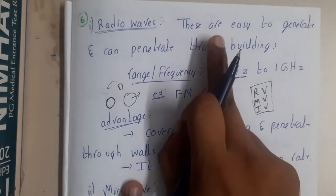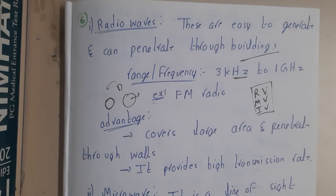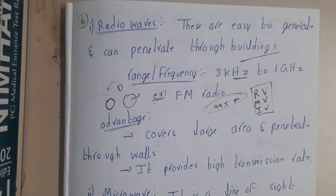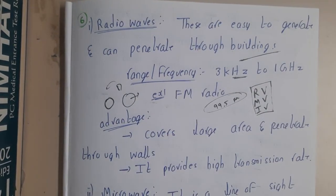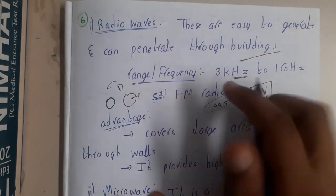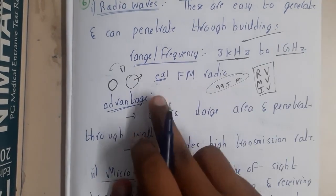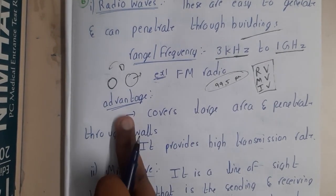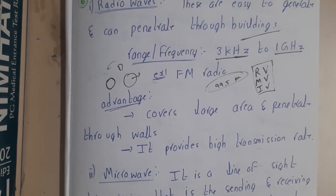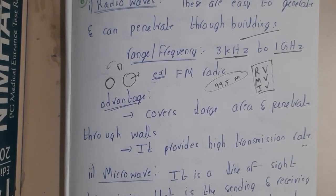Radio waves are easy to generate and can penetrate through buildings. If you are inside your house tuning your radio to 99.5 FM, you can listen from inside your home with all doors closed — radio waves can penetrate through walls and buildings. The frequency range is from 3 kilohertz to 1 gigahertz. The best example is FM radio. Advantages include covering a large area, penetrating through walls, and providing high transmission rates with no lags.